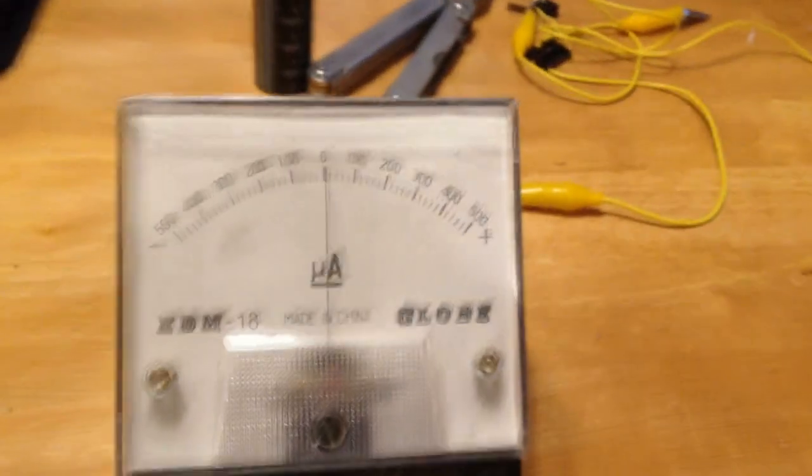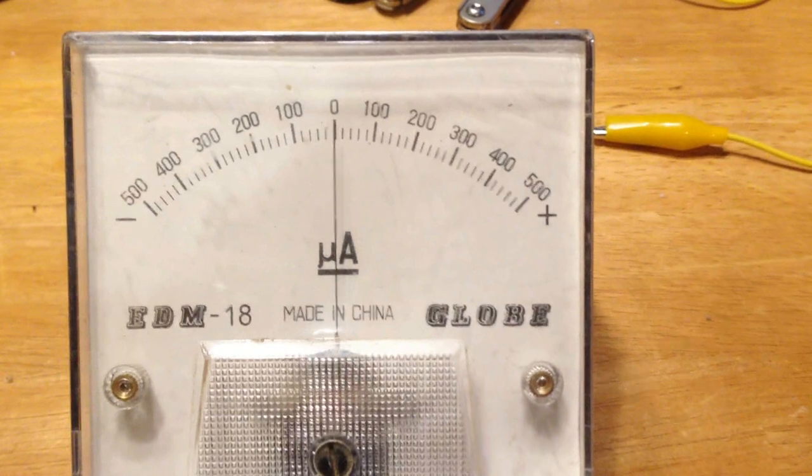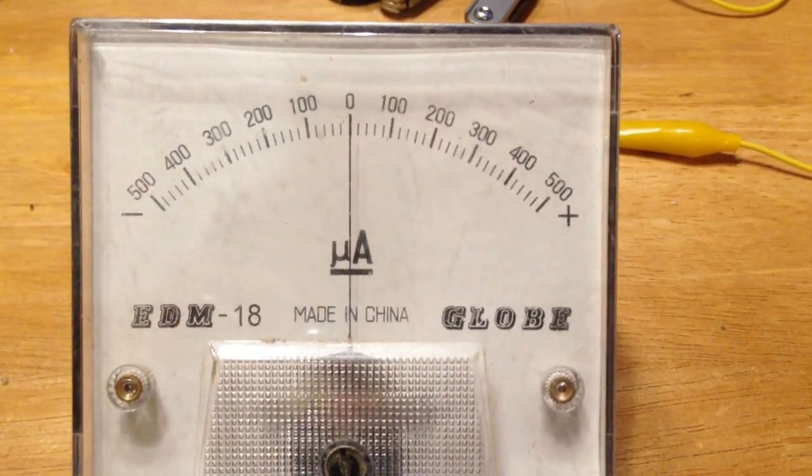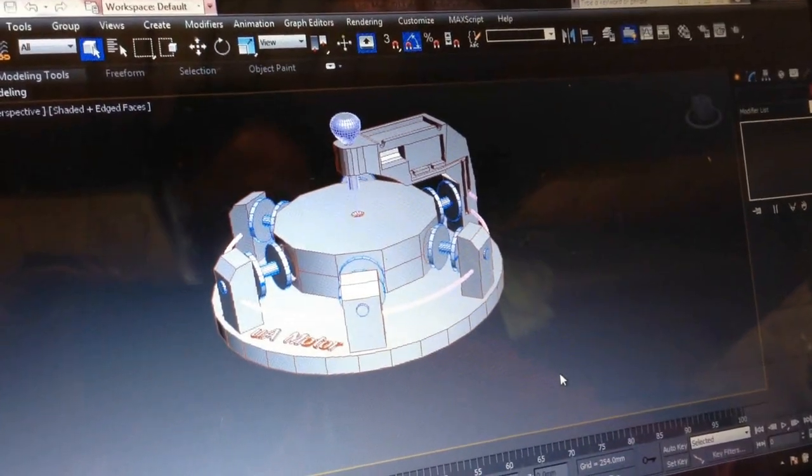I've got the motor connected to a small electrolytic capacitor. Between that I've got my micro amp meter and a battery. I let this run through the night to smooth out, and you can see now the amount of energy this motor is using.